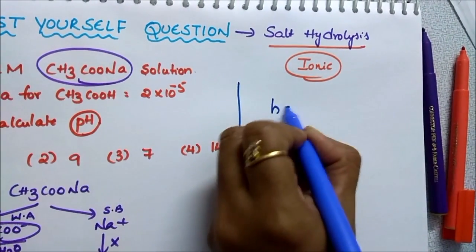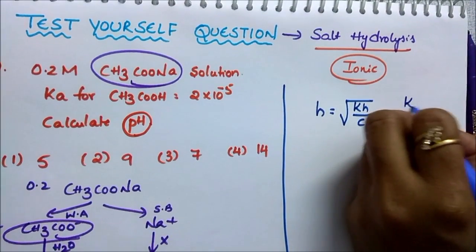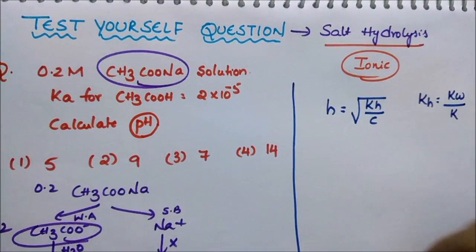H is equal to square root of KH by C. What is KH students? KH, I told you, you have to solve by using formula KW by KA or KB.